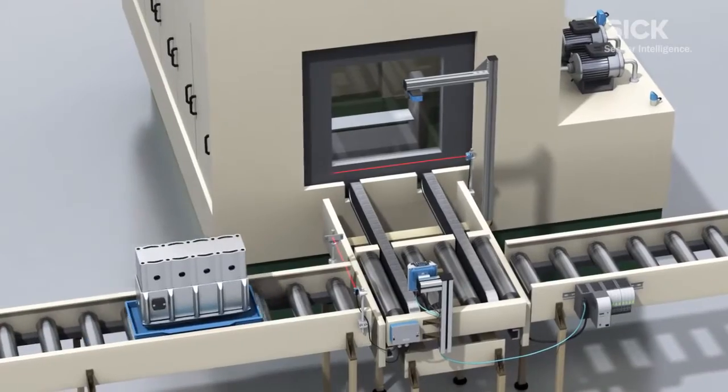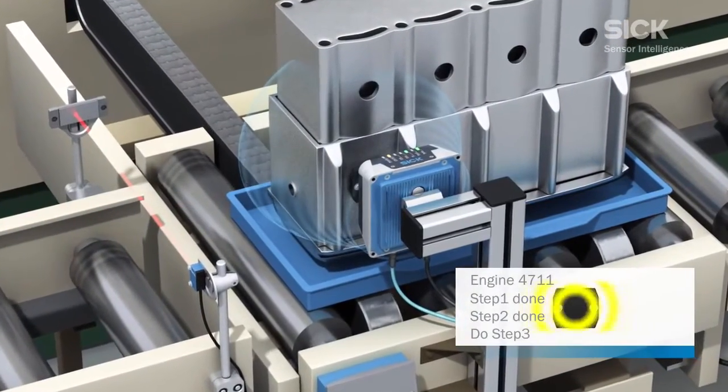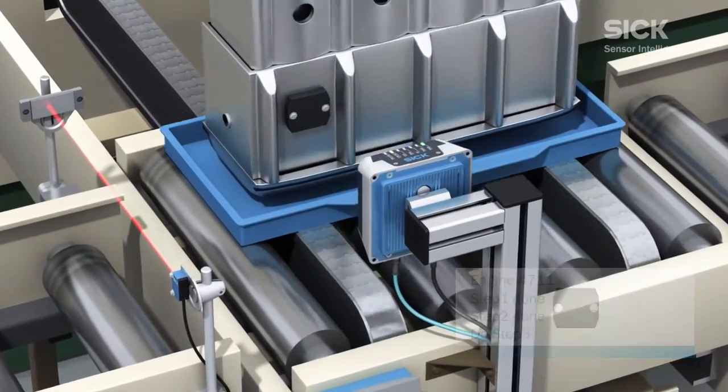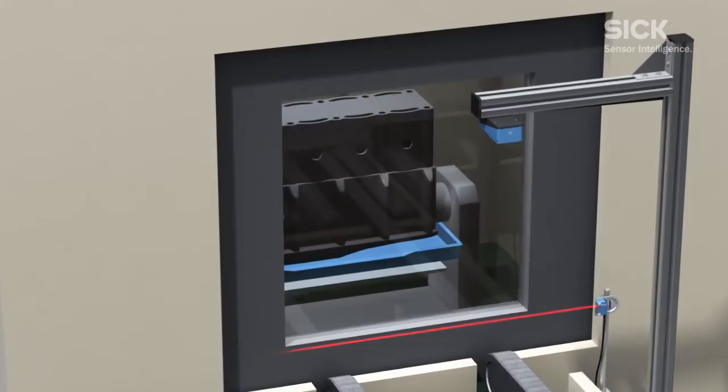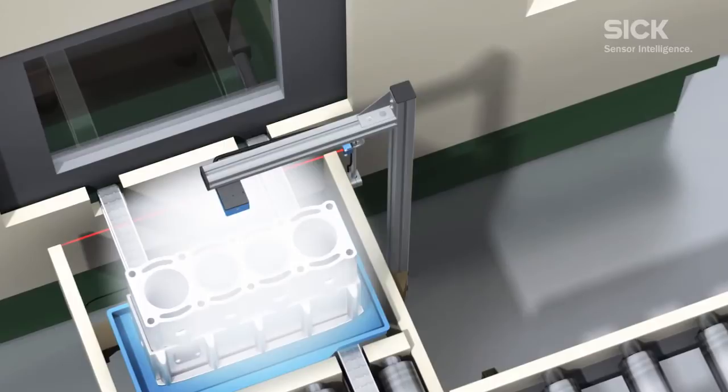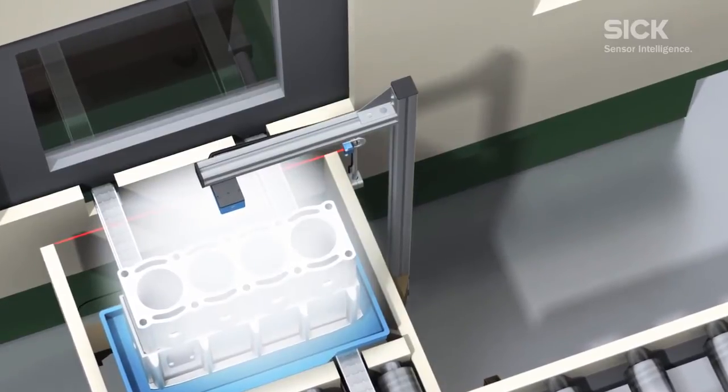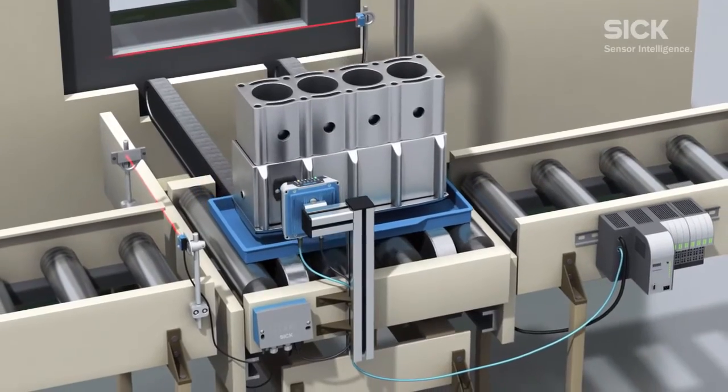On this production line, an on-metal transponder has been mounted directly on the motor block. The RFID RFU620 sensor reads out the transponder data and the production machine adjusts to the current variant. The inspector checks the production quality, and the tolerance data is written to the transponder by the RFID sensor.